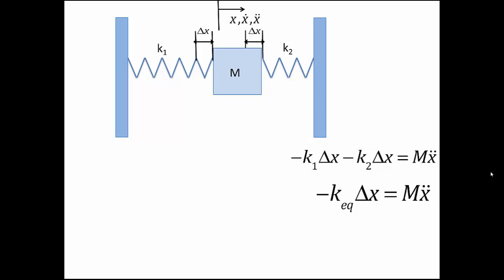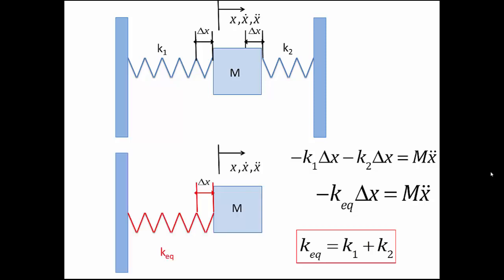So if you compare these two equations, the equivalent spring constant is going to be k equals to k1 plus k2. So we can have a system look like this to satisfy the equation of motion. And this one spring has a constant of k equivalent that equals to the sum of k1 and k2.